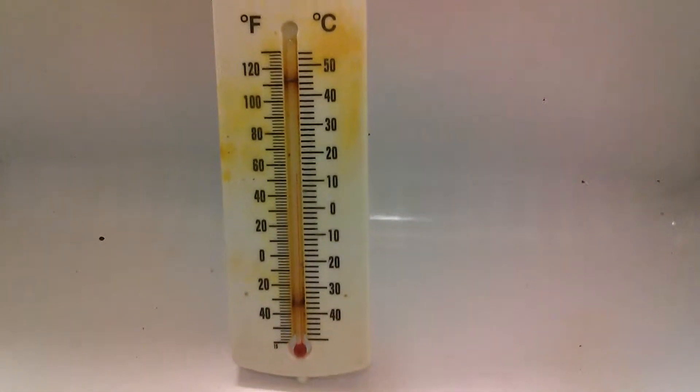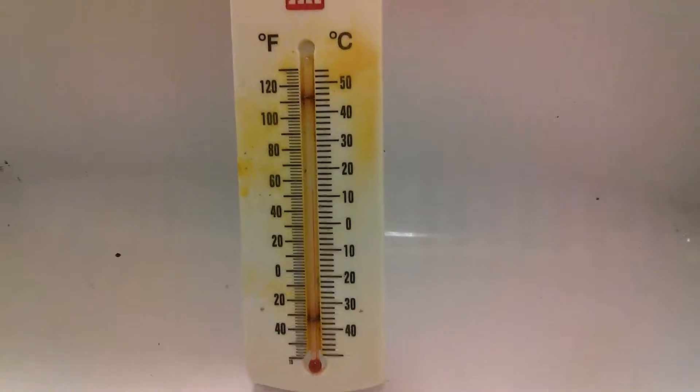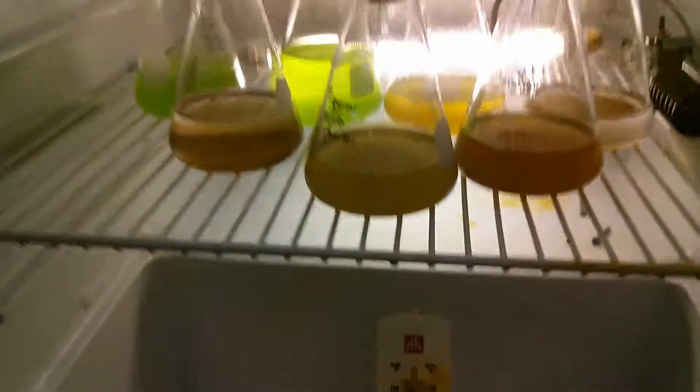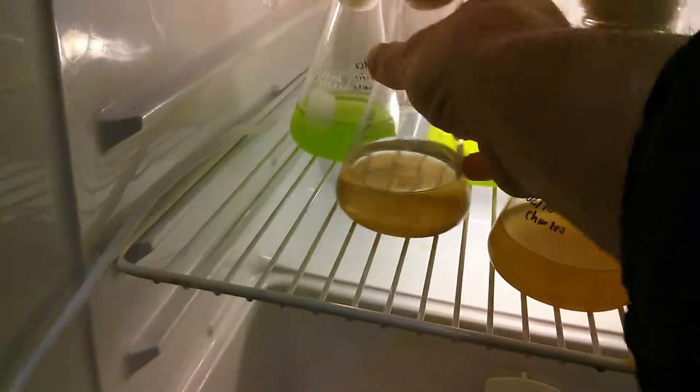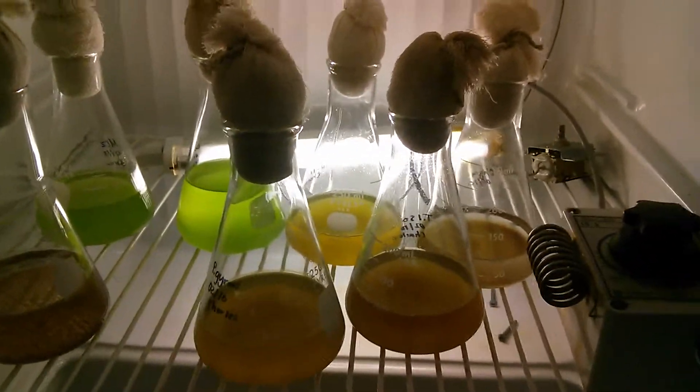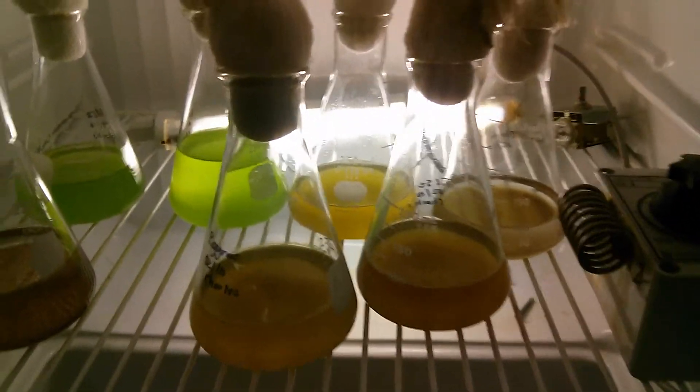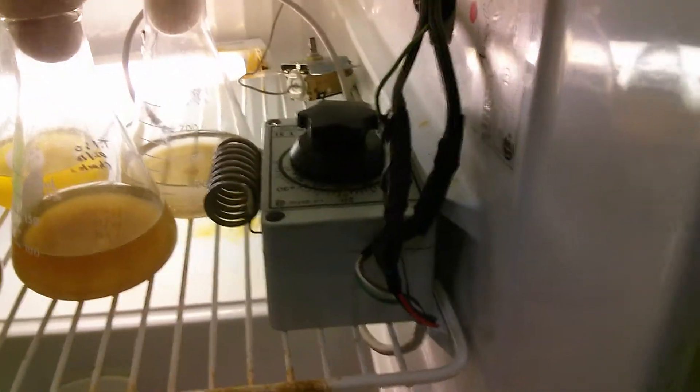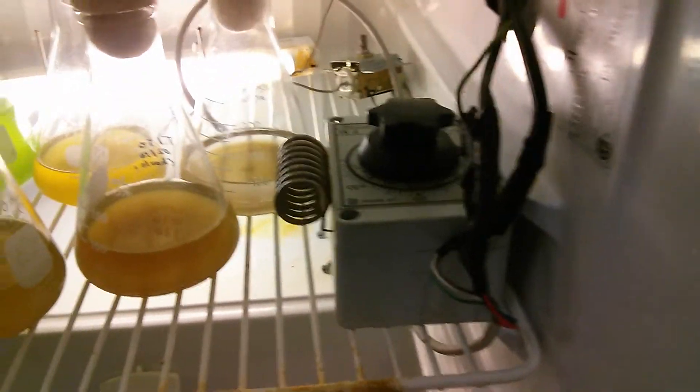You always keep a thermometer in there to get a decent idea of what's going on. So we're running at around 12 degrees Celsius. The light actually produces most of the heat that's required in there, and this will come on to keep it cool whenever it gets too warm.